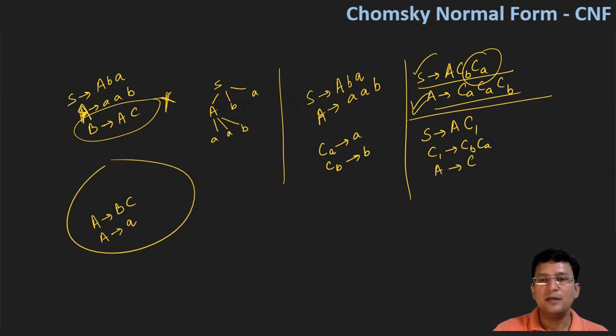So this is C_A and C_A and C_B. So C_A produces small a, and C_B produces small b.